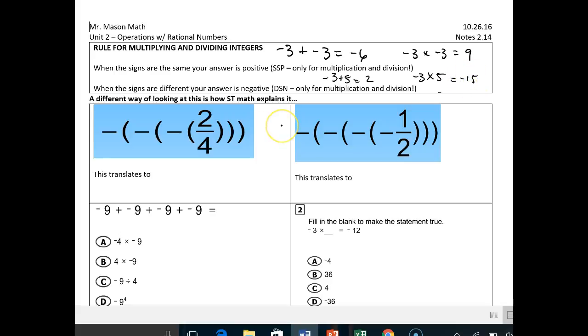I really like how ST Math explains it. They give you this thing like a fraction, and then they have it flip back and forth. Here's how this works out. You can just follow the negative signs to your answer. This is a negative 2 fourths, but what's the opposite of that? Positive 2 fourths. What's the opposite of that? Negative 2 fourths. So really it's negative, positive, negative.